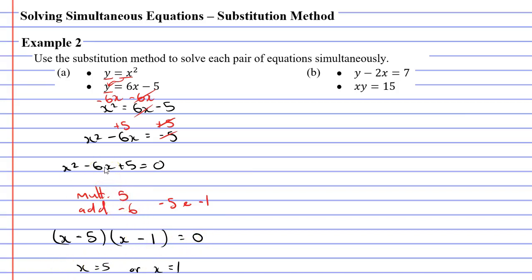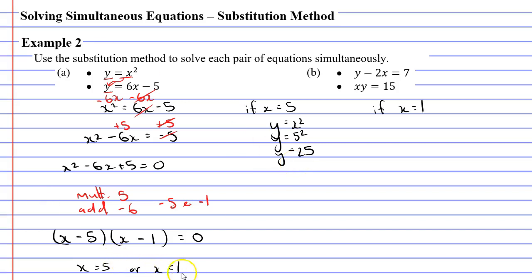Because this was a quadratic equation, we got two solutions for x, which means we need to check for two solutions for y as well. I'll pick y equals x squared because it looks like the simpler equation. If x equals 5, we substitute 5 into x squared, giving us y equals 25. If x equals 1, then 1 squared equals 1, so y equals 1.